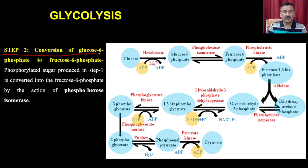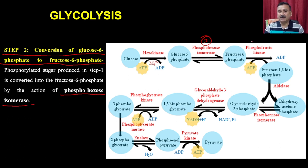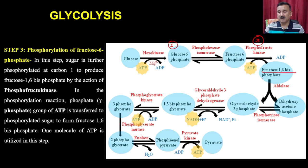In step number 2, there is a conversion of glucose-6-phosphate to fructose-6-phosphate through an isomerization reaction. The enzyme that catalyzes this reaction is called fructose-6-phosphate isomerase. In step number 3, another series of phosphorylation takes place. Phosphofructokinase catalyzes another round of phosphorylation, generating a molecule called fructose-1,6-bisphosphate. This molecule is a very high energy, very unstable molecule.